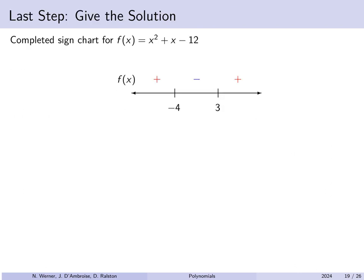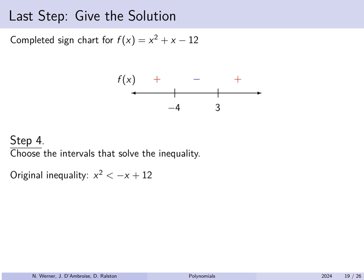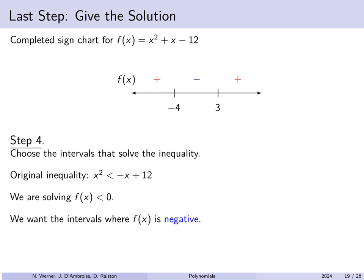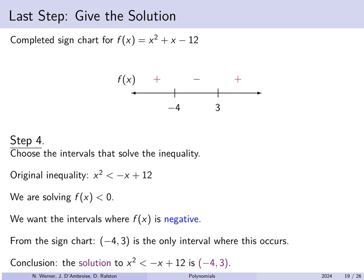The completed sign chart shows f(x) = x² + x − 12 is positive on (−∞, −4), negative on (−4, 3), and positive on (3, ∞). We want f(x) < 0, so the solution is the interval (−4, 3), not including either endpoint since we need strict inequality.